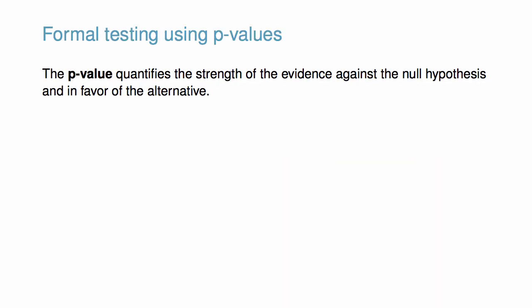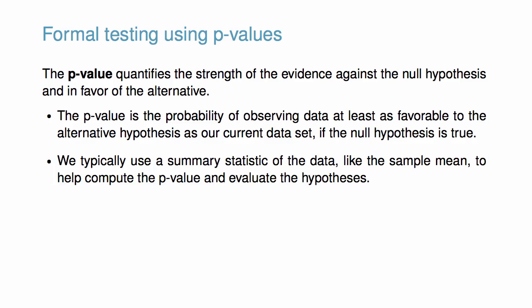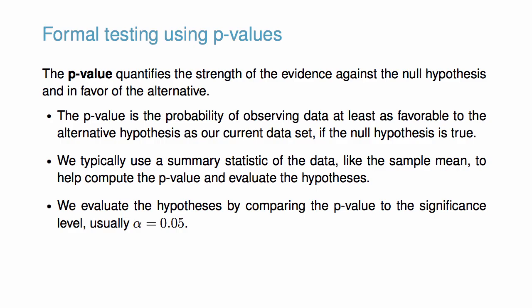The p-value is a way of quantifying the strength of evidence against the null hypothesis and in favor of the alternative. The p-value is the probability of observing data at least as favorable to the alternative hypothesis as our current data set, if the null hypothesis is actually true. We typically use a summary statistic of the data, like the sample mean, to help compute the p-value and evaluate the hypotheses. We evaluate the hypotheses by comparing the p-value to the significance level, usually 0.05.